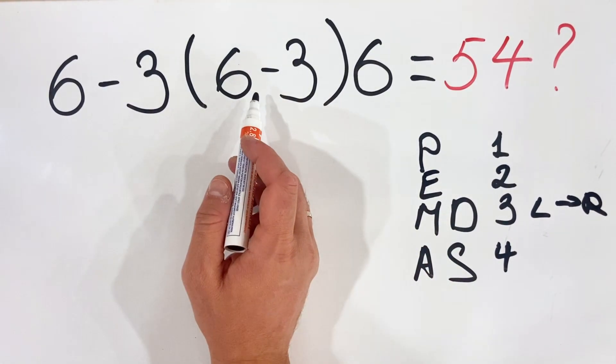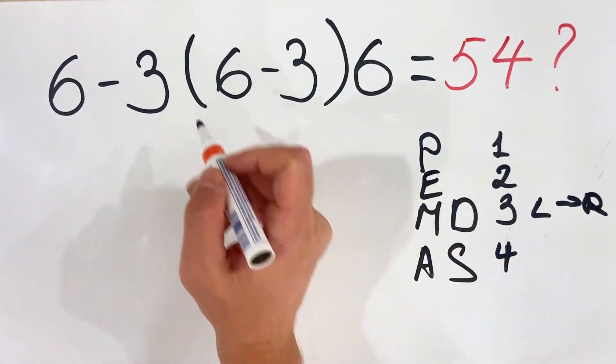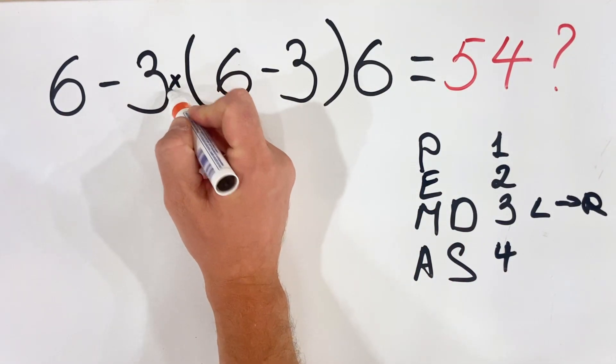What we can see here is we have parenthesis, so we're going to do that first, and we also have multiplication.